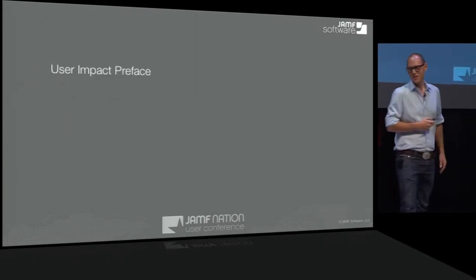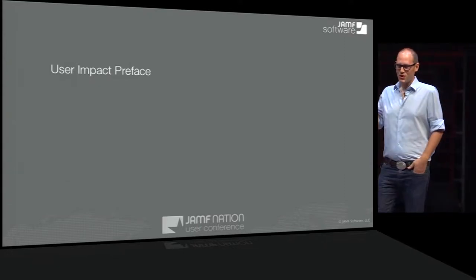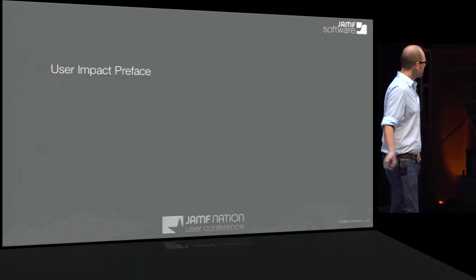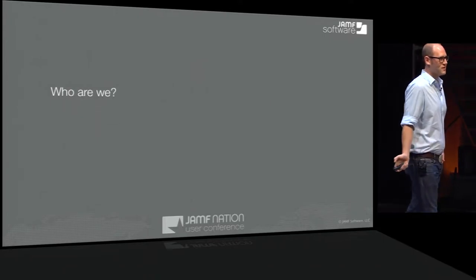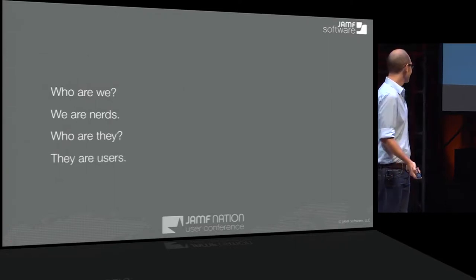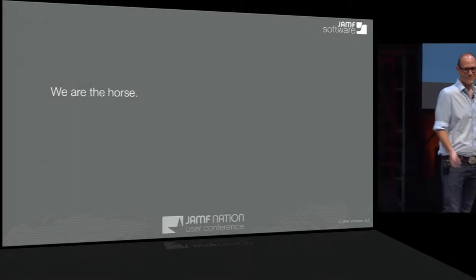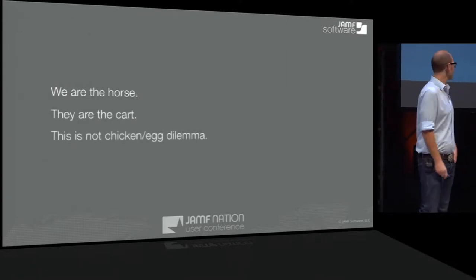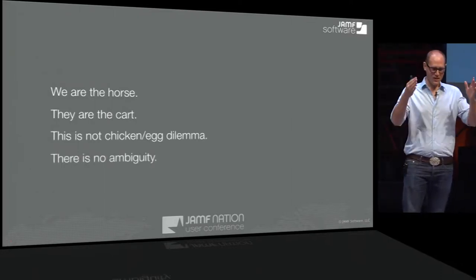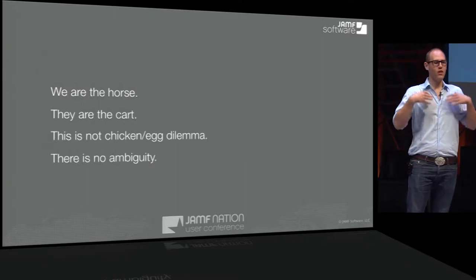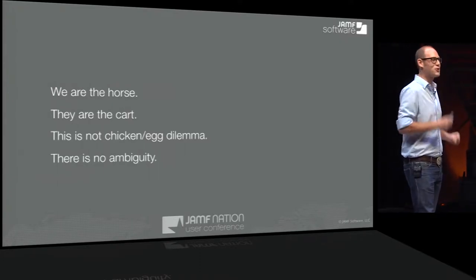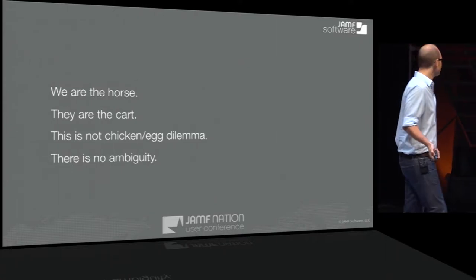I inserted a user impact preface here because you should start by thinking about your users — it's the most important part of policies. We are nerds. They are users. We are the horse; they are the cart. This is not a chicken-or-egg dilemma. There's no ambiguity about whether we're here for them or they're here for us. They need to get work done. We have jobs so that they can get their work done. The better experience we hand off to our end users, the happier everyone will be. So as you're about to create your first policy, think: how will this impact my end users?